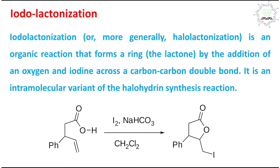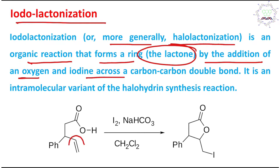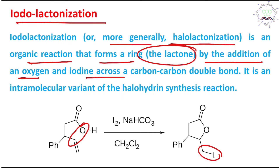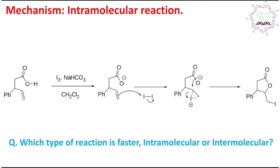Now let's come to our main topic: iodolactonization, or more generally halolactonization. It is an organic reaction that forms a ring or lactone by the addition of an oxygen and iodine across a carbon-carbon double bond. It is an intramolecular variant of halohydrin synthesis — one side forms a C–I bond and the other forms a C–O bond. The reagents are iodine and sodium bicarbonate, with DCM (dichloromethane) as the solvent.